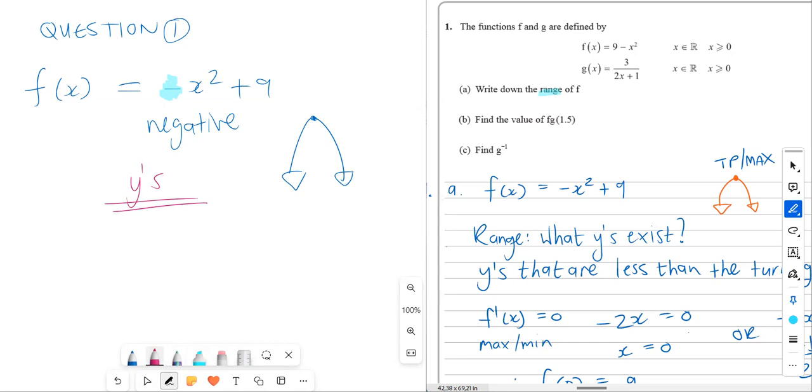It's also the range. Range has to do with the y's. So it's saying what y's exist. What y's exist for this function? Well, from here down, y exists. Y exists from the turning point downwards. So all we need to really look at is what y's exist from the turning point downwards. So the thing that we need is what y do we have at that turning point?